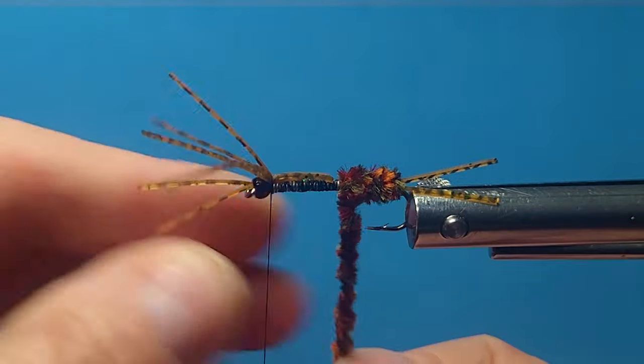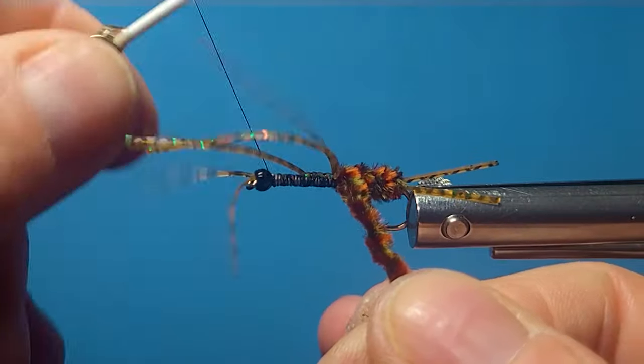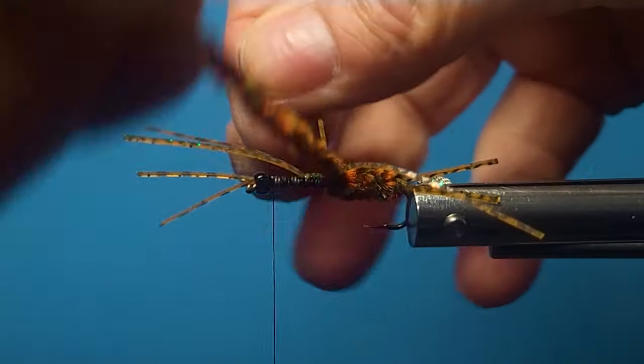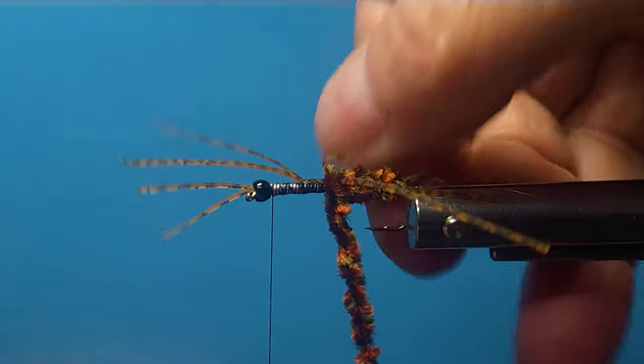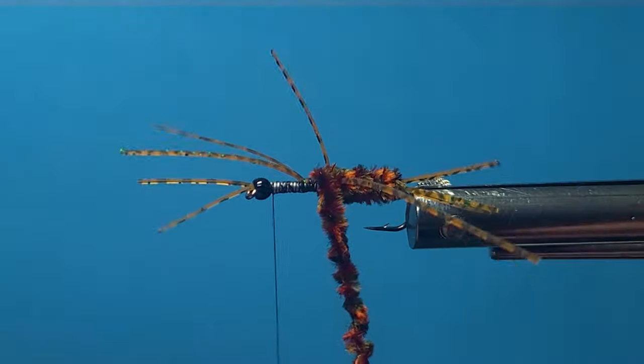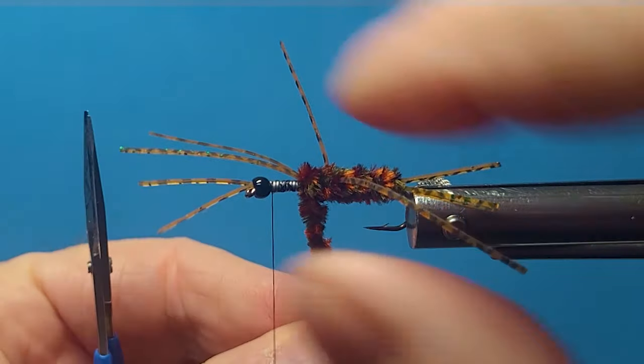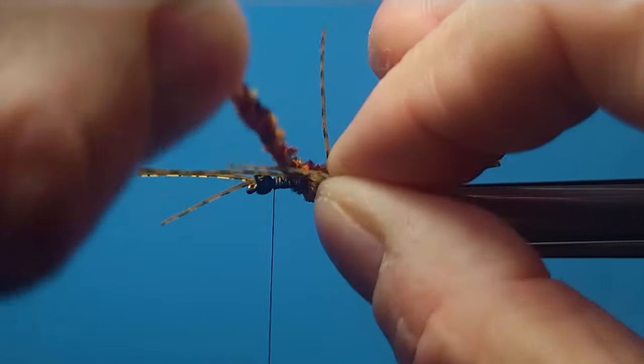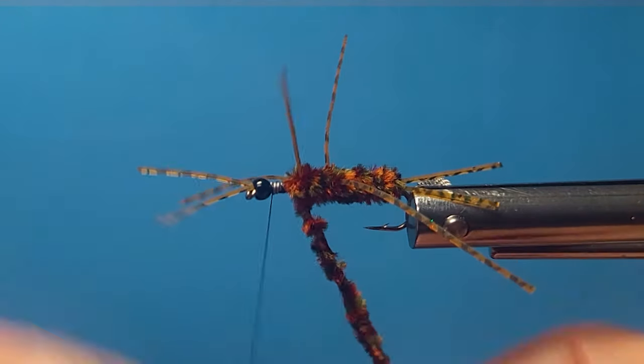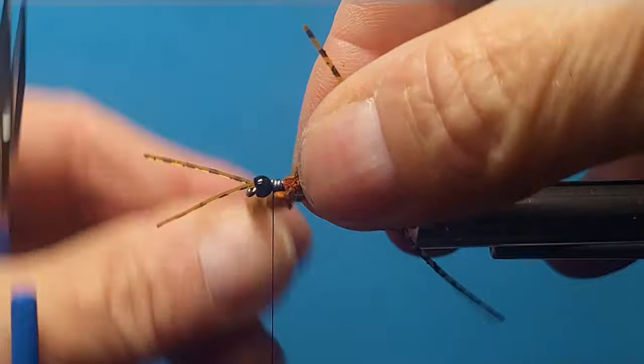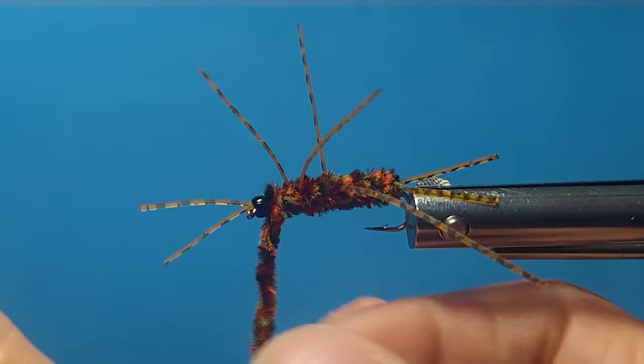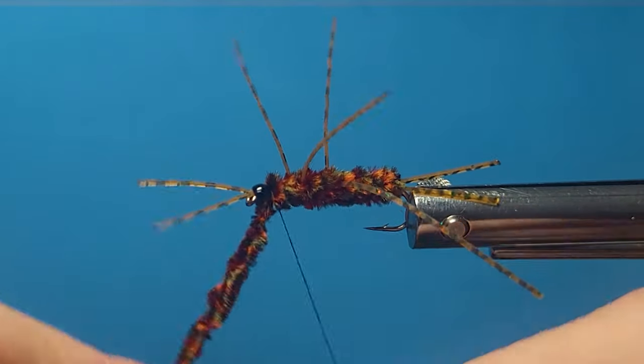Until we get to the rubber release, come over the top in between, that should split the rubber pretty good for you there. Get another turn or two, another one there, come in between it again. Two more turns, right in behind the tungsten bead.